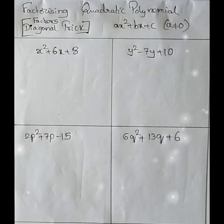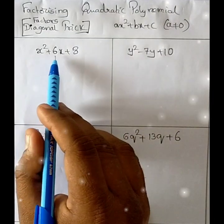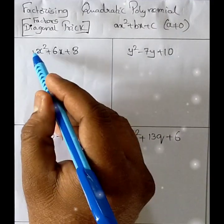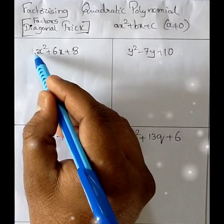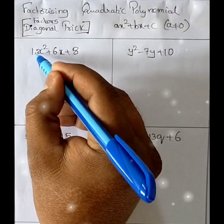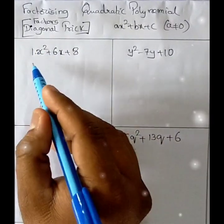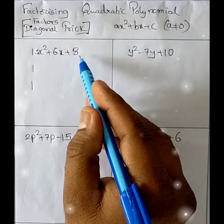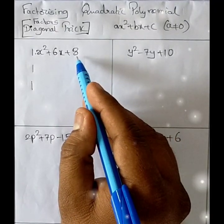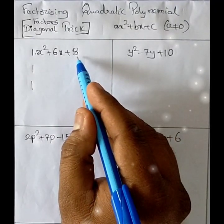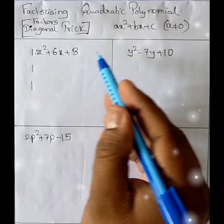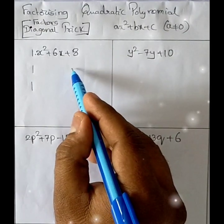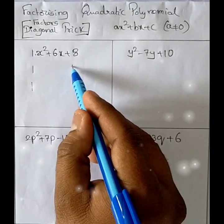Let us see the first one: x² + 6x + 8. The coefficient of x² is 1, and the factors of 1 are 1×1. Next we go for the constant, that is 8. The factors of 8 are 1×8 and 2×4. I am taking 2 and 4.